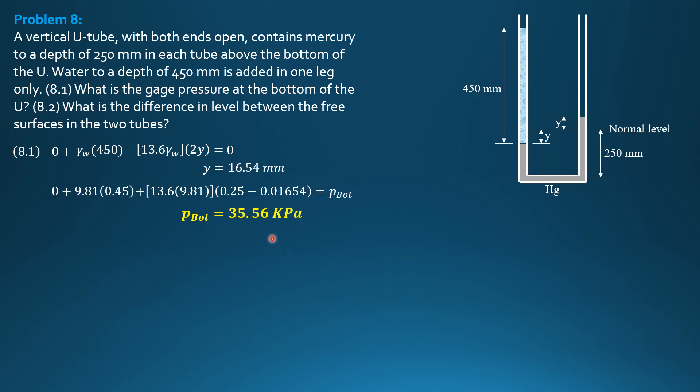Then what is the difference in level between the free surfaces in the two tubes? So obviously, we will denote that delta Y, or delta as shown in the figure, and delta is 450 minus 2Y. So from the figure, delta is 450 minus 2Y, and Y is 16.54. So delta is equal to 416.9 mm.